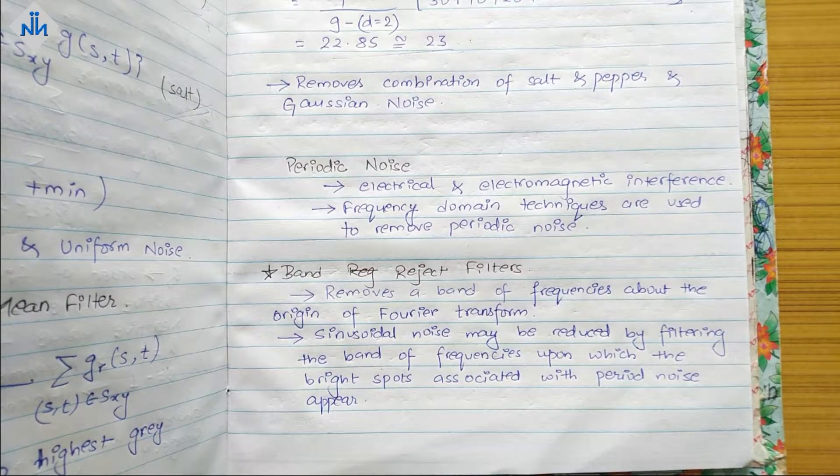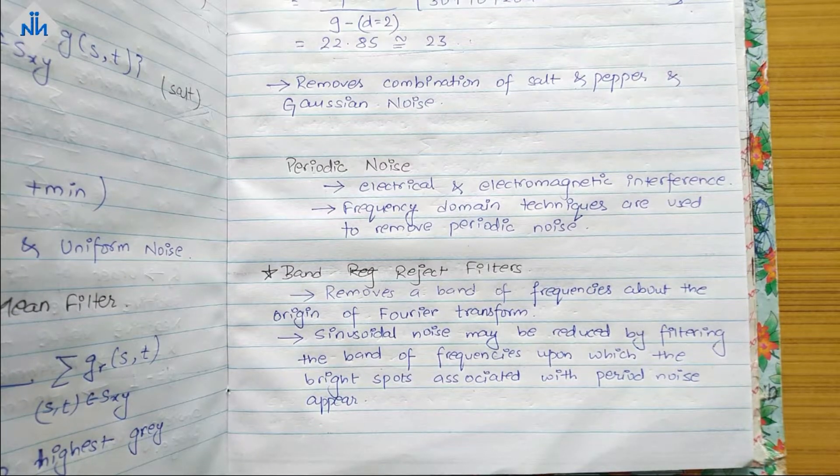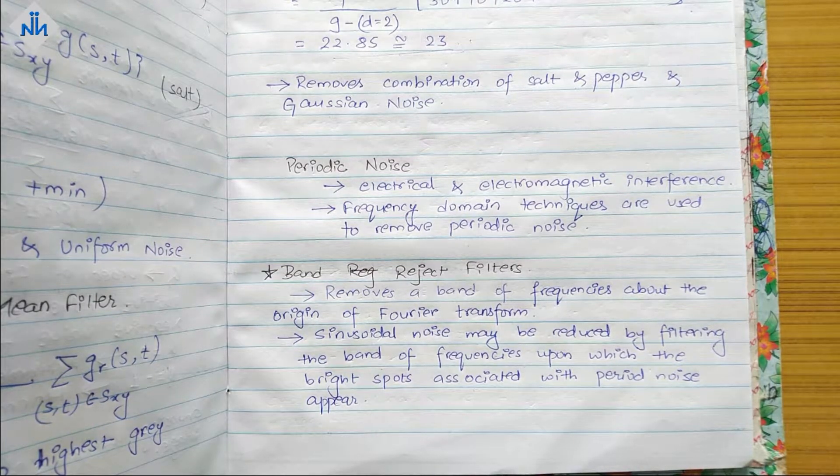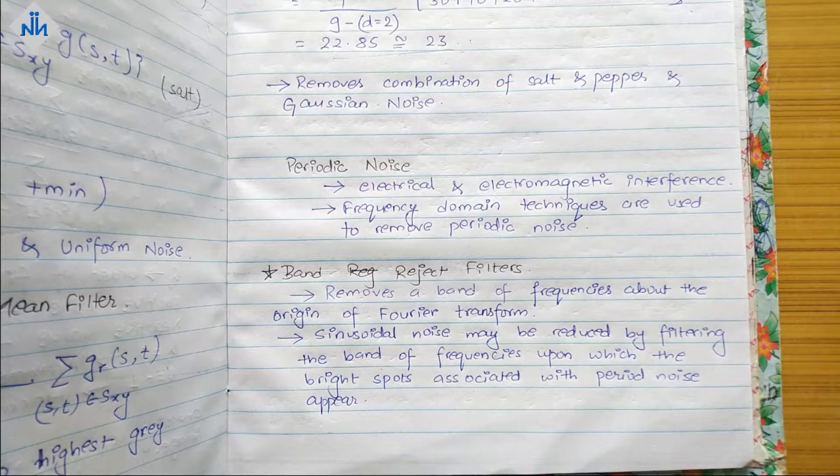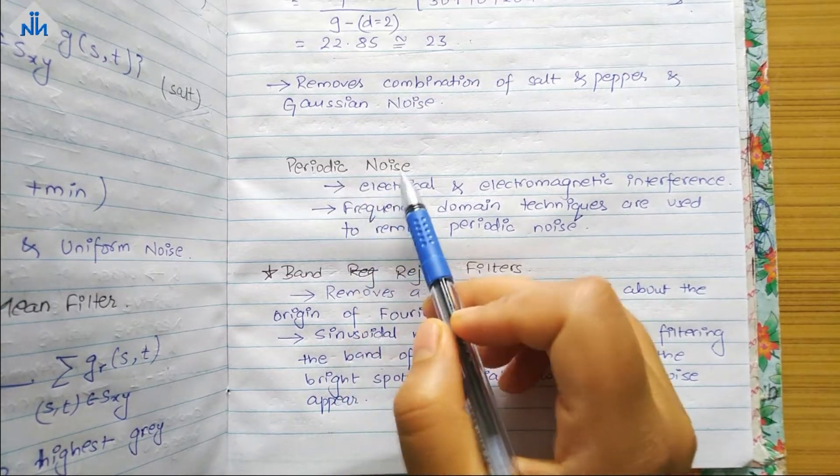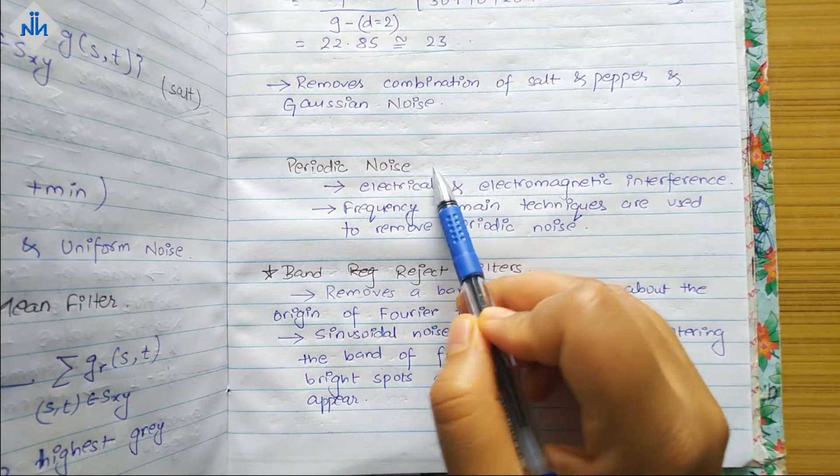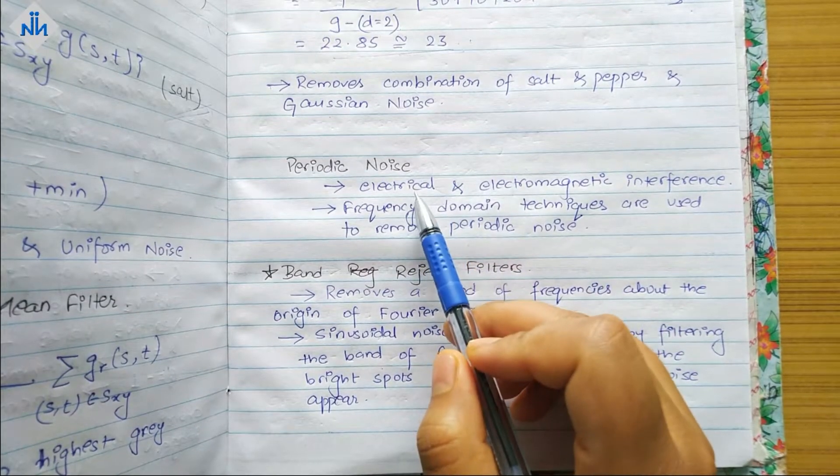Hello everyone and welcome back to Notes Naka. In this video we're going to talk about frequency domain filtering and what type of noise it removes. We have something known as periodic noise, which is the noise of electrical and electromagnetic interference.